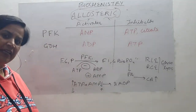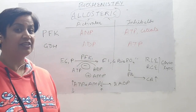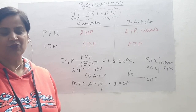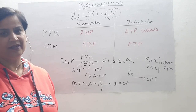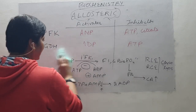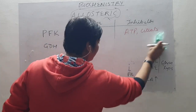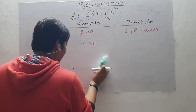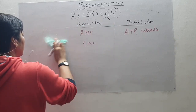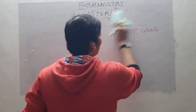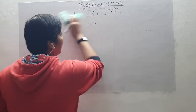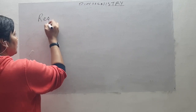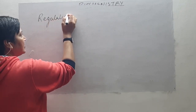The same is the case with glutamate dehydrogenase, the enzyme required for the oxidative deamination of glutamic acid to form alpha-ketoglutarate. In these two reactions, we can say allosteric inhibition plays a very important role in the regulation of enzyme activity.